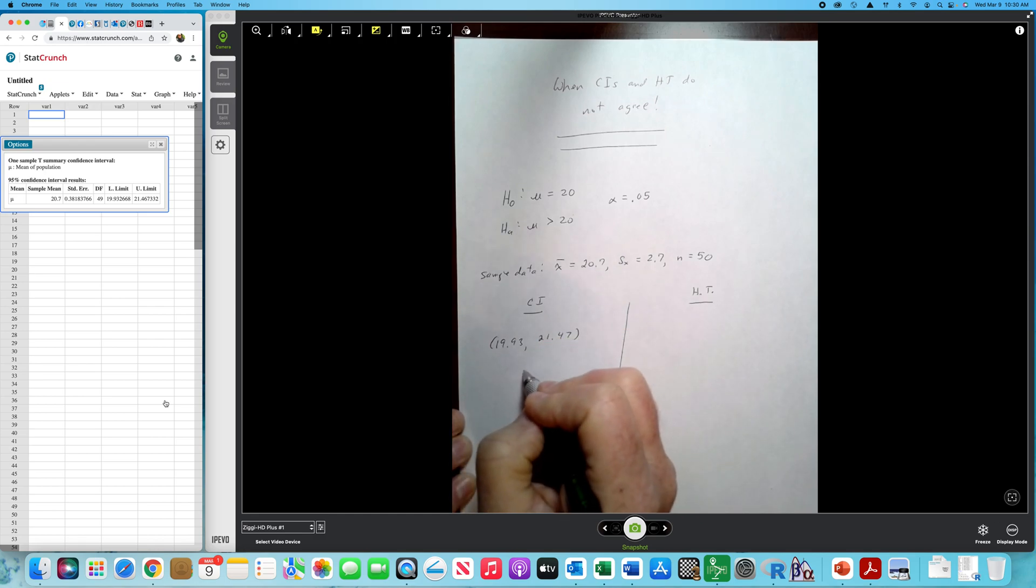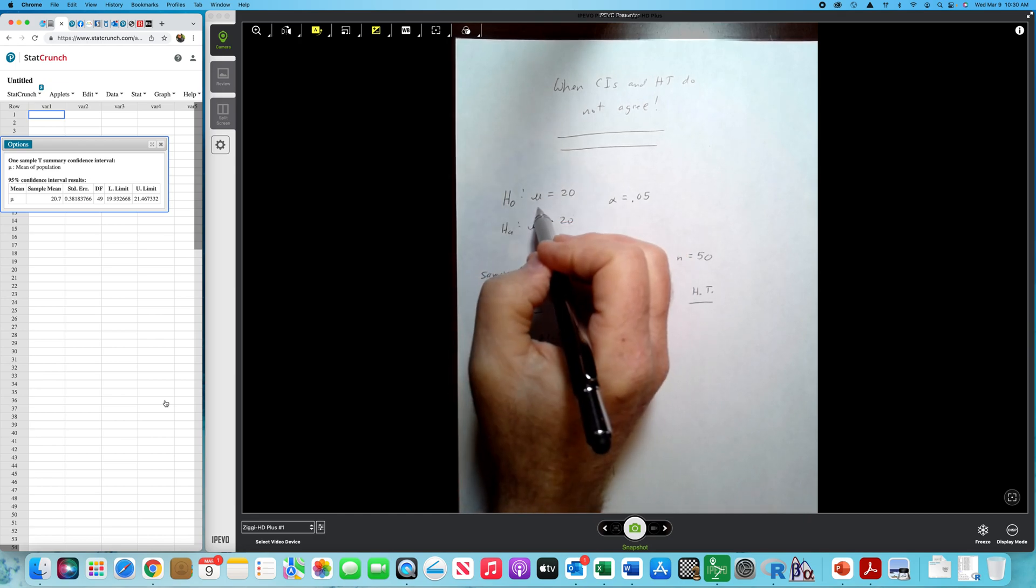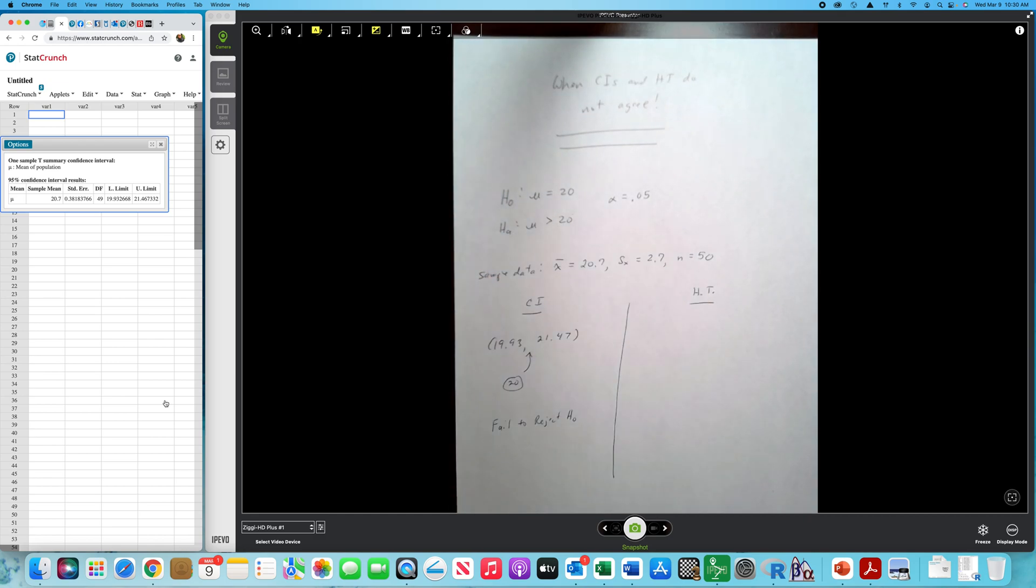Now, notice that 20, which is the hypothesized value, is contained in our interval. So it's plausible to believe, since the interval we're using to estimate mu when mu is equal to 20, if 20 is in our interval, it's plausible that we would fail to reject the null and conclude that there's no reason to reject this. The mean appears to be 20.